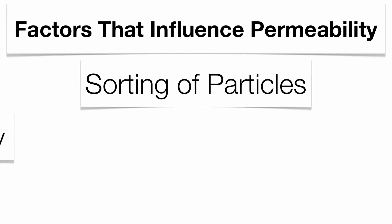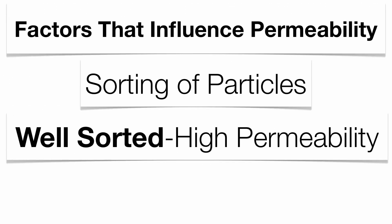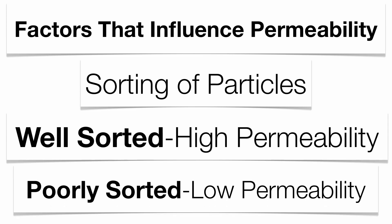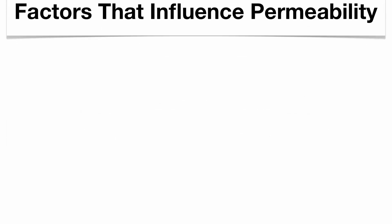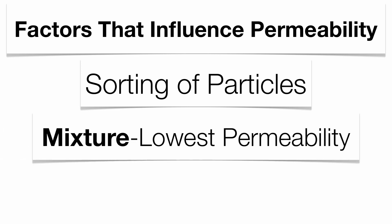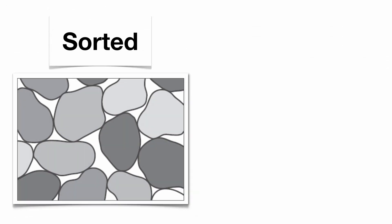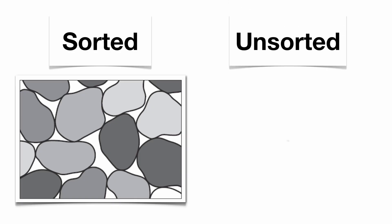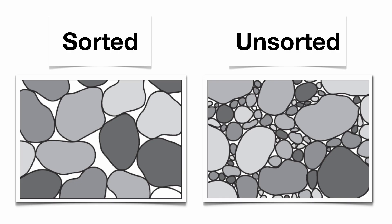Next up is the sorting. Well-sorted gives you a high permeability; poorly sorted gives you a low permeability, and that leads into mixtures as well — a mixture is going to have the lowest permeabilities of all. A sorted sample has high pore space and high permeability. An unsorted sample has low porosity and much lower permeability. It's very important to understand that porosity and permeability are going to work together with each other.